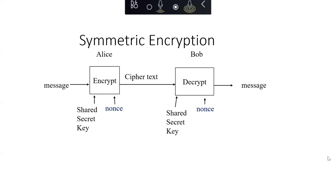There are multiple different types of cryptography. Symmetric encryption is where both parties have the same shared secret key. For example, suppose Alice wants to send a message to Bob saying she really likes Bitcoin, but she doesn't want anyone else to know. She encrypts that message using a shared secret key. The output is what we call ciphertext — the message has been manipulated so no one else can read it except someone who has a copy of the shared secret key. When Bob receives the message, he uses his shared secret key to decrypt it.